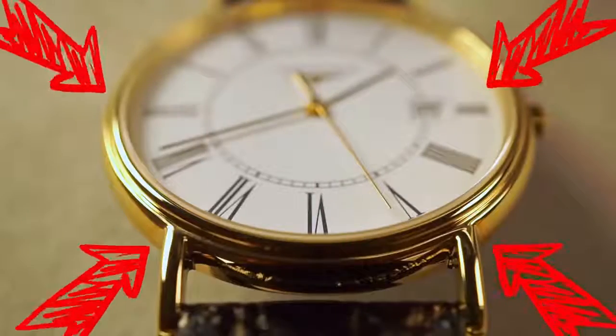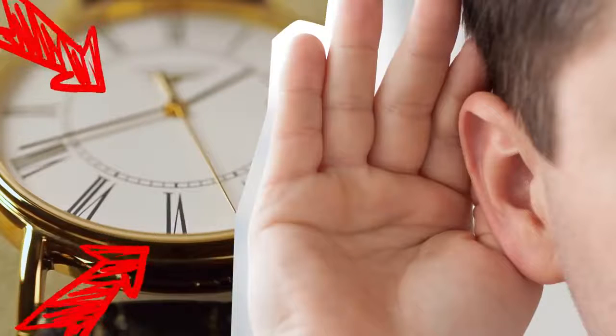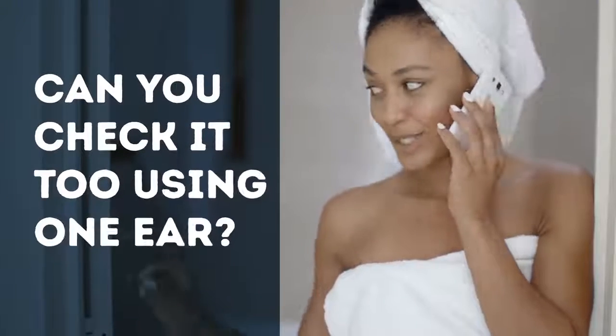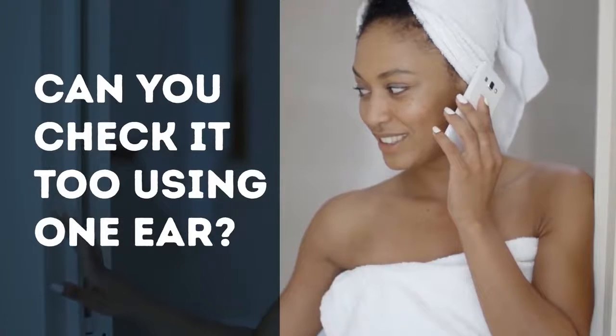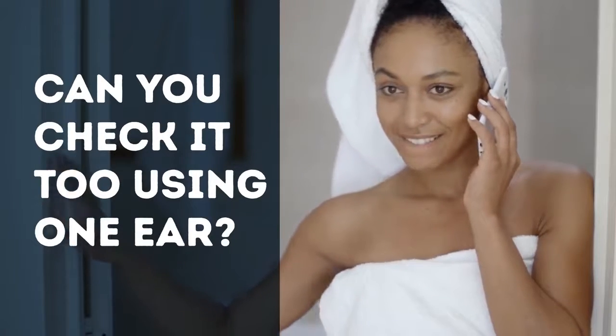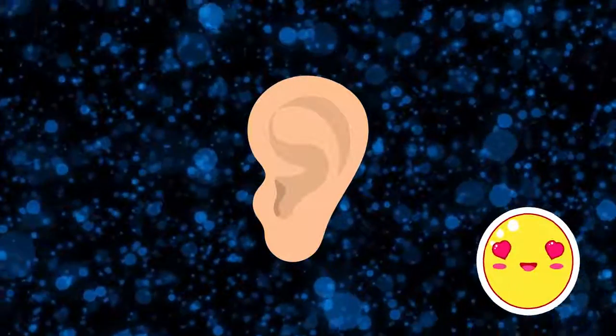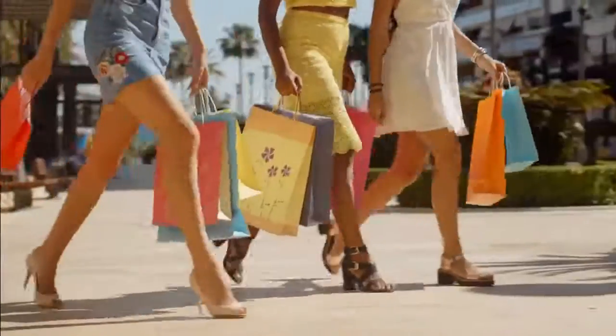Do you have a watch nearby? Is it working? Better hold it up to one of your ears and listen carefully for ticking. Is your phone ringing? It's awfully quiet. Can you check it too using one ear? The ear you use for the tasks is your dominant one. And if you couldn't hear your watch ticking, it's probably because it's digital, dummy. No, no, don't worry about that. I did the same thing.